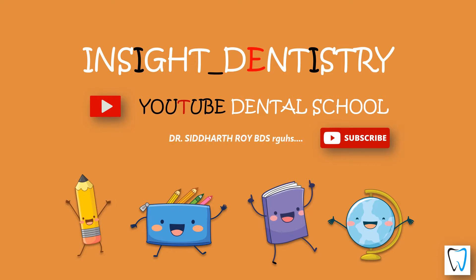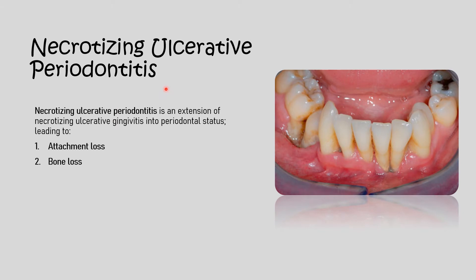Necrotizing ulcerative periodontitis is an extension of necrotizing ulcerative gingivitis. Gingivitis usually shows swelling and ulceration of the gingiva. When this gingivitis progresses into periodontitis, causing necrosis and ulceration of the periodontium as well as gingiva, it leads to necrotizing ulcerative periodontitis, resulting in attachment loss — where the gum detaches from the tooth surface — and severe bone loss causing exfoliation of the teeth.